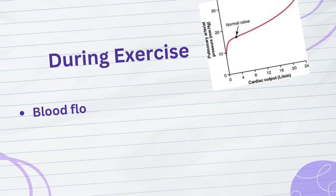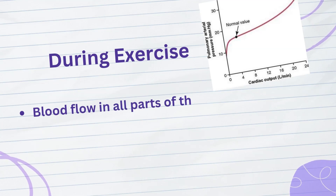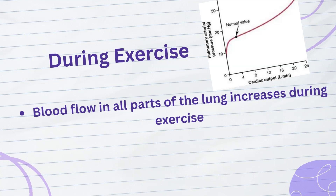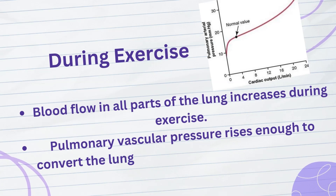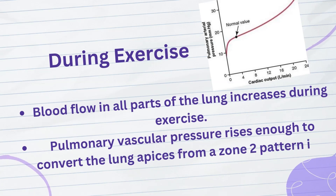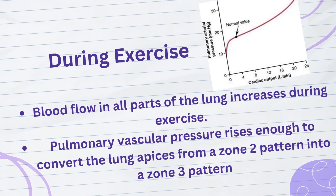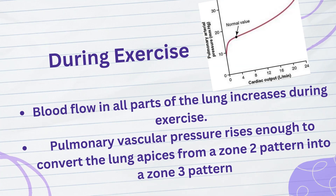The blood flow in all parts of the lung increases during exercise. The increase in flow in the top of the lung may be 700–800%, whereas the increase in the lower part of the lung may be no more than 200–300%. The reason for these differences is that the pulmonary vascular pressures rise enough during exercise to convert the lung apices from a zone 2 pattern into a zone 3 pattern of flow.